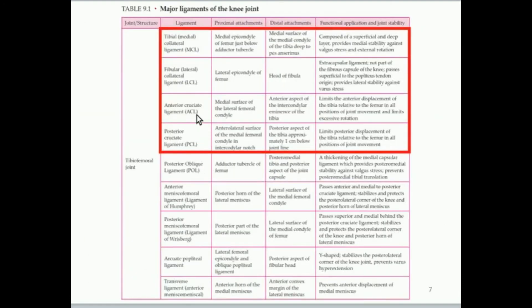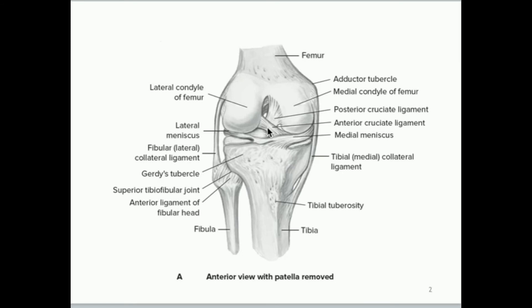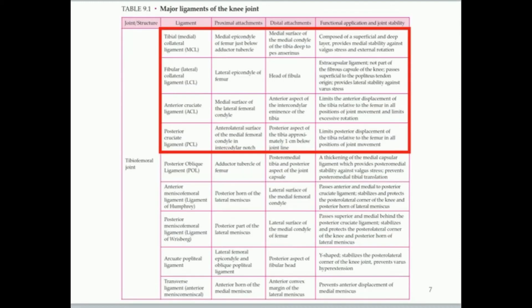The main function of the ACL is to prevent excessive rotation of the knee. If you imagine the knee twisting — a rotation of the femur relative to the tibia — extreme rotation will cause the ACL to snap. Whenever any of these ligaments snap, you typically hear a popping noise, followed by intense swelling, usually loss of function, and extreme destabilization of the knee. This normally requires surgery to repair the damaged ligament. The PCL, the posterior cruciate ligament, limits posterior displacement of the tibia relative to the femur in all positions of joint movement.